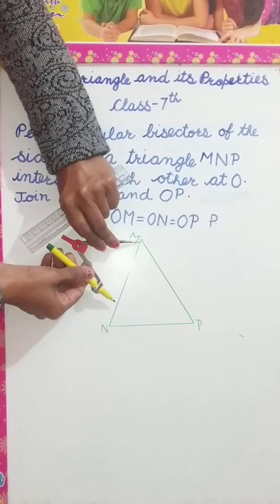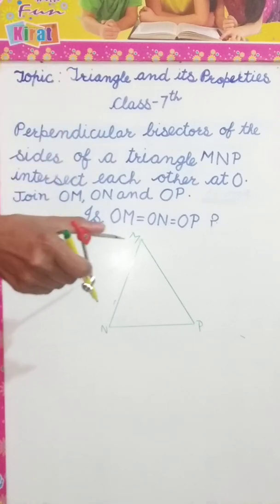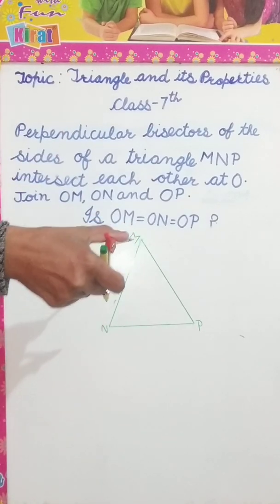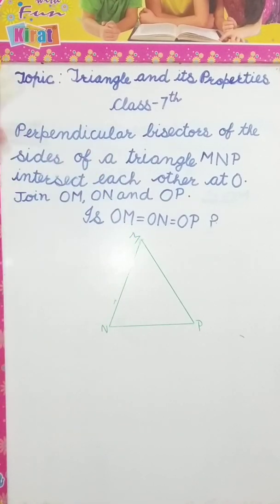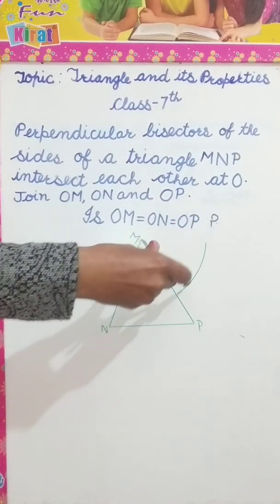I have taken it more than half of this MN and now I will bisect MN. When I have to bisect MN, first of all I will take M as a center and draw an arc.